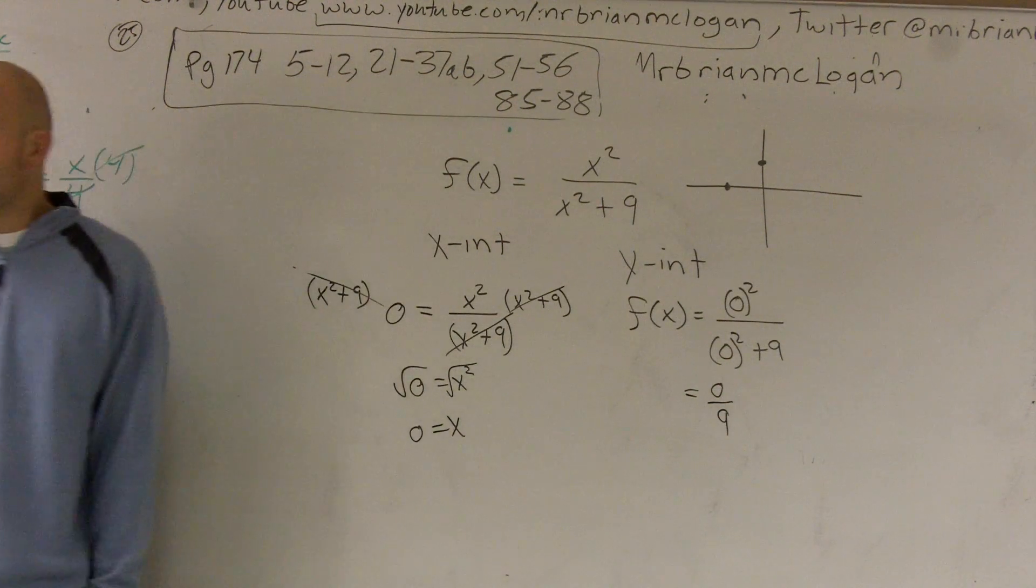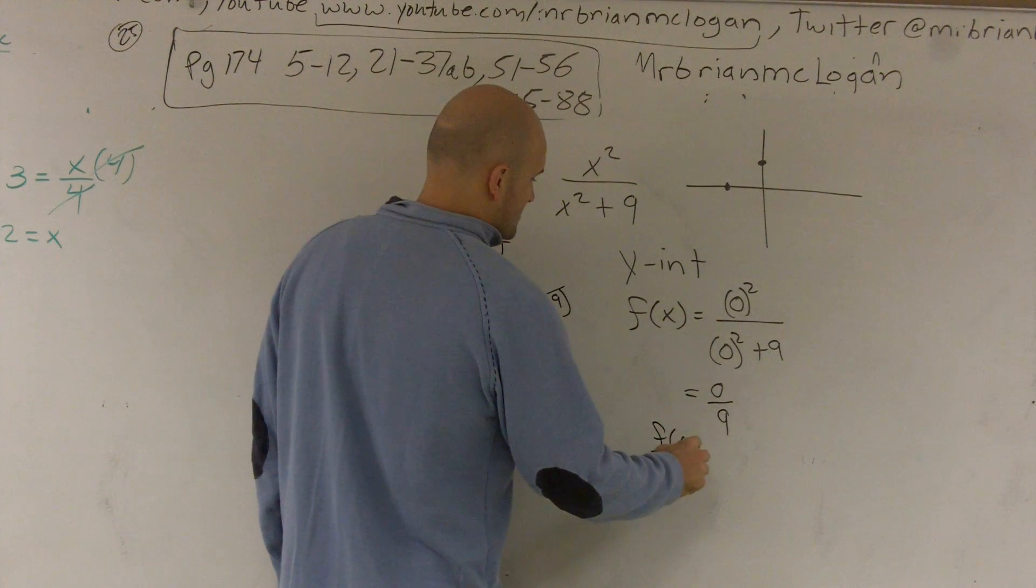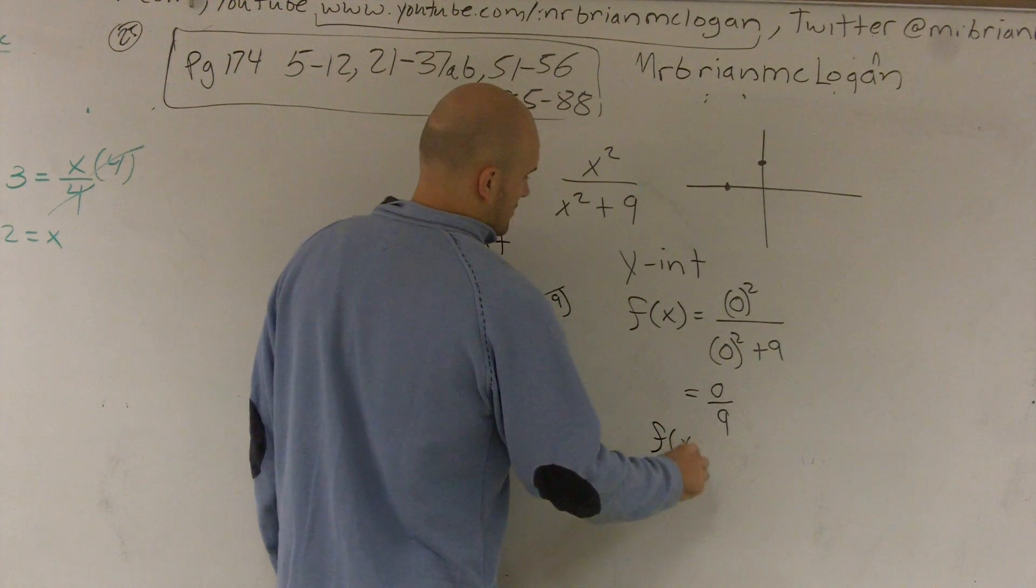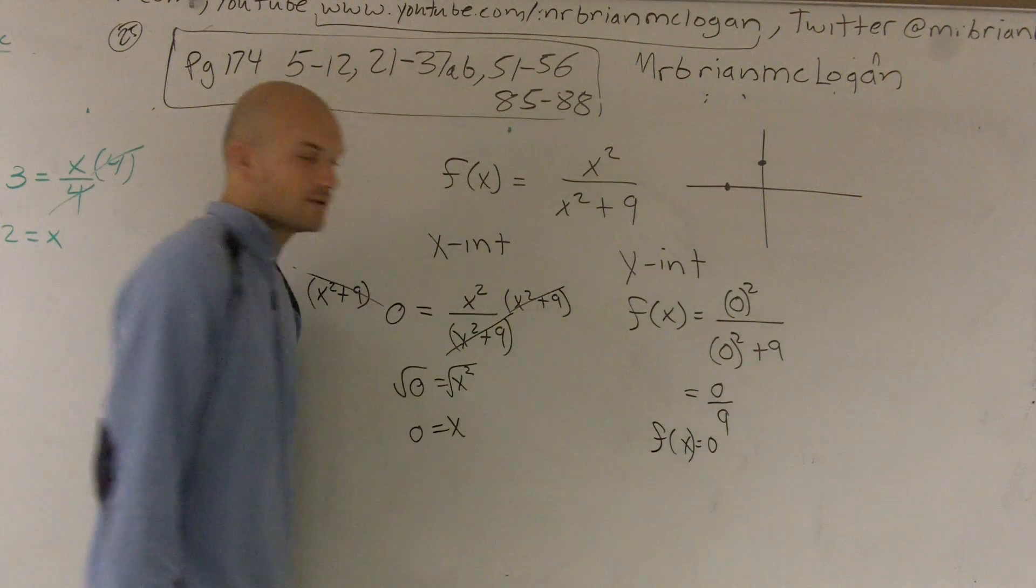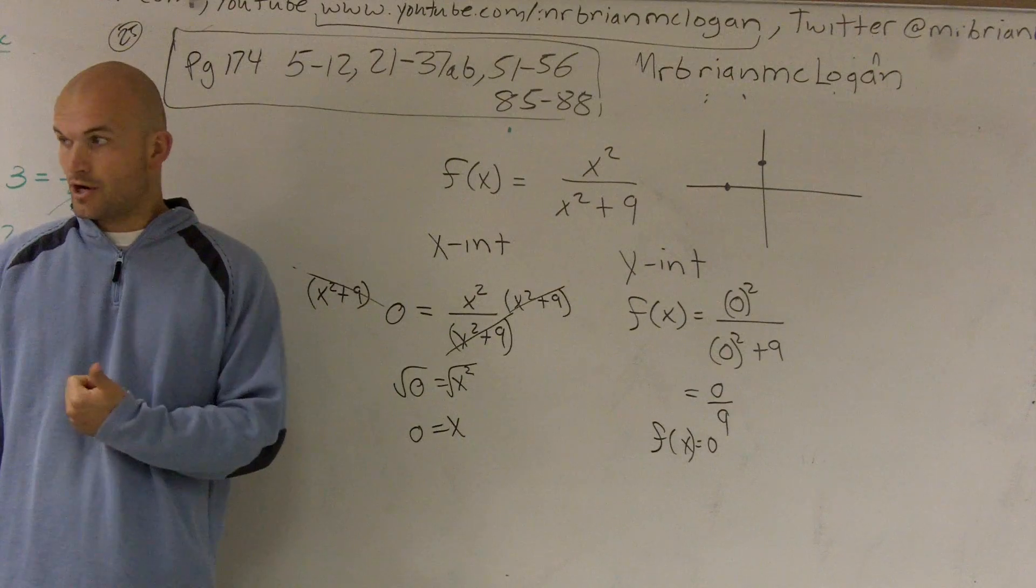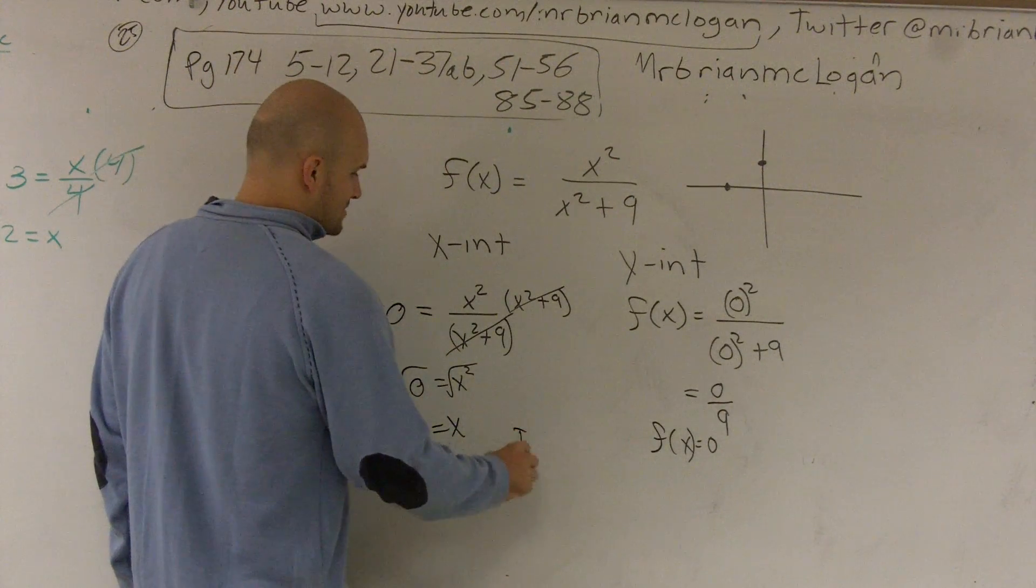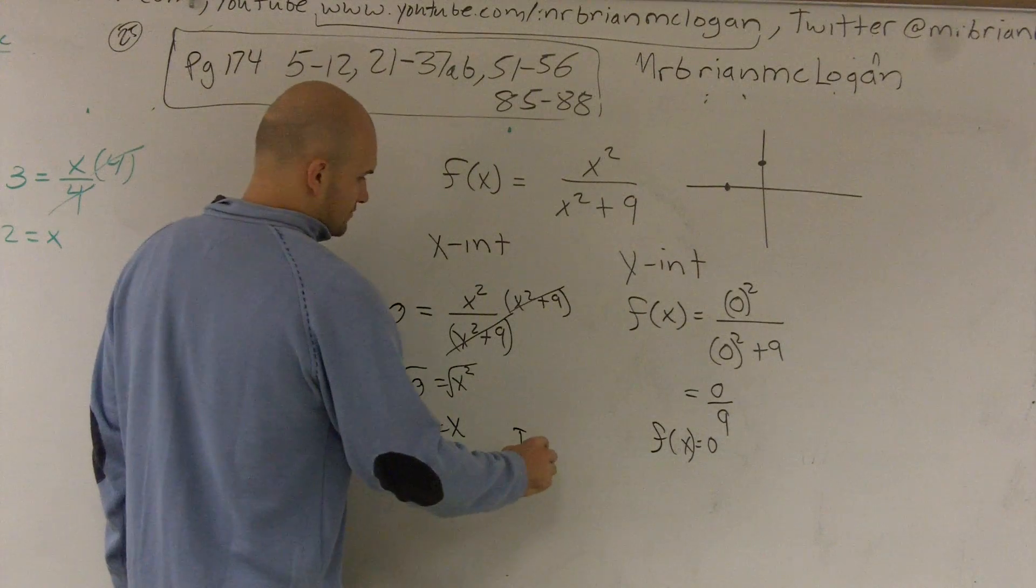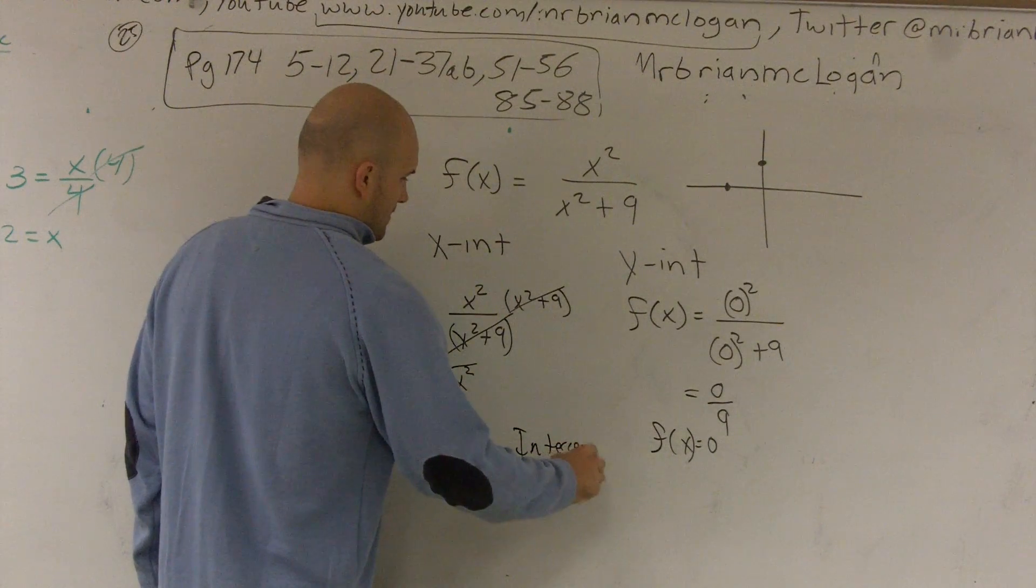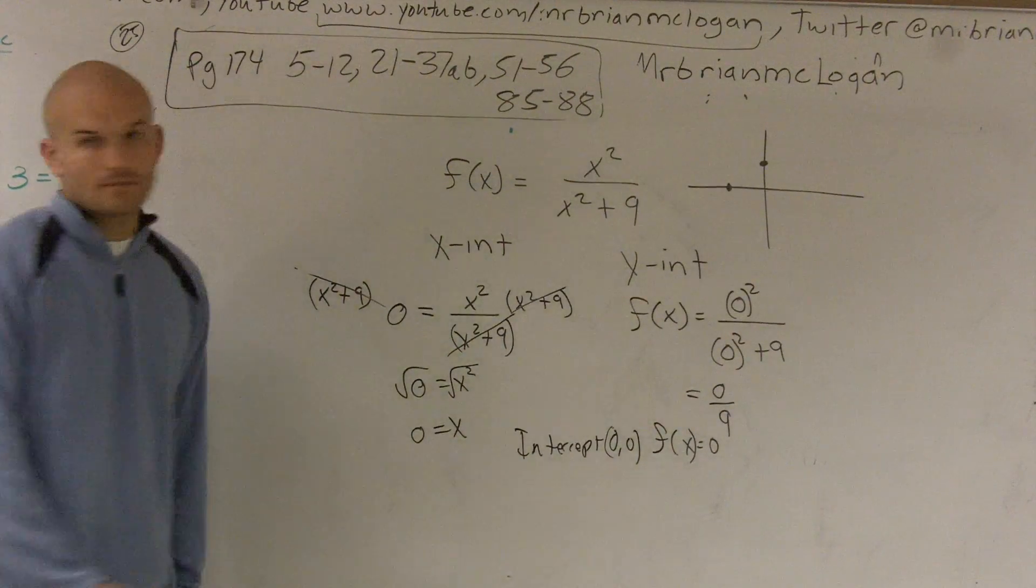Well, 0 divided by anything is going to give you 0. So here we have f(x) equals 0. So for this problem, my x intercept is 0. My y intercept is 0. So my intercept is just going to become 0 comma 0. All right?